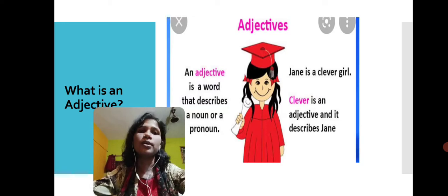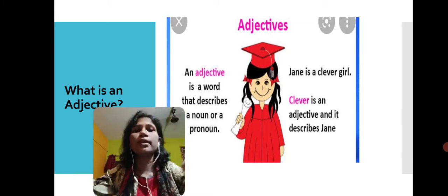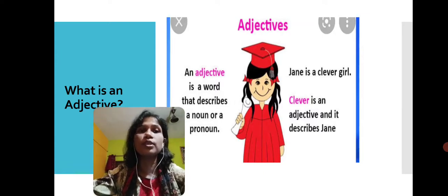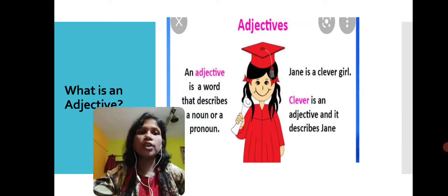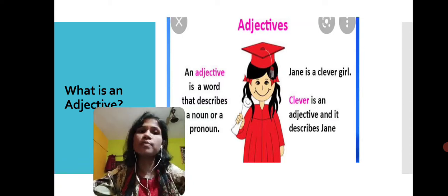Now here the word clever is an adjective and it is describing the girl Jane. The word clever is an adjective describing Jane, telling what kind of a girl Jane is. Jane is a clever girl. So an adjective is a word that describes a noun or a pronoun. That's why it is also called a describing word.